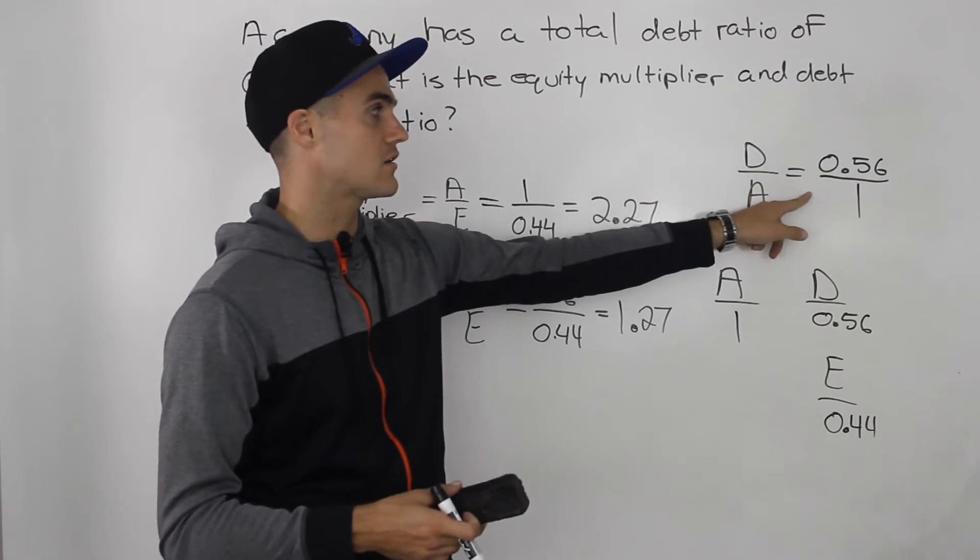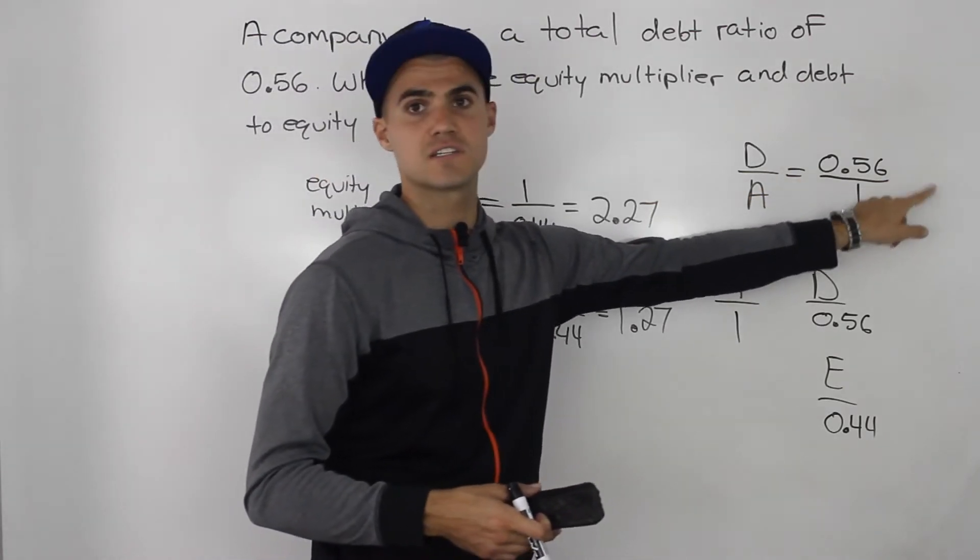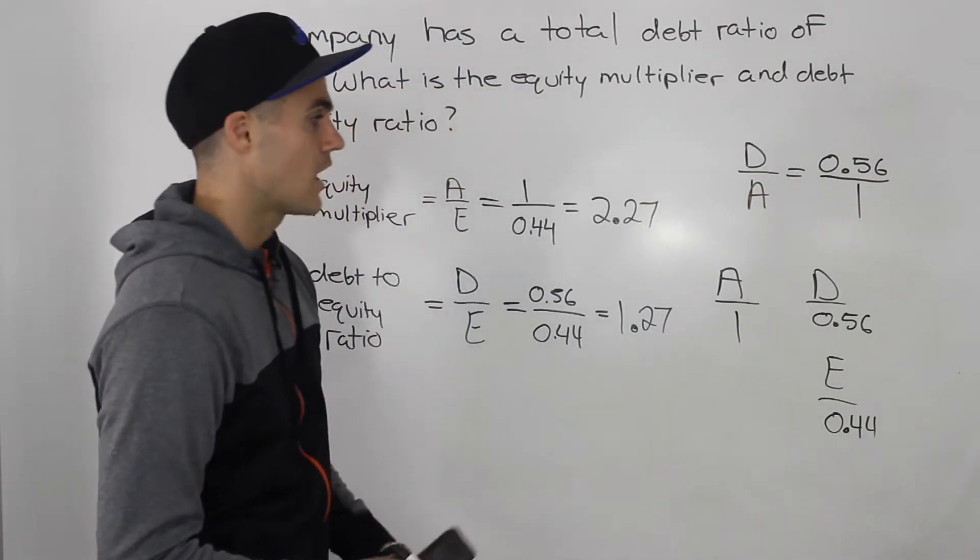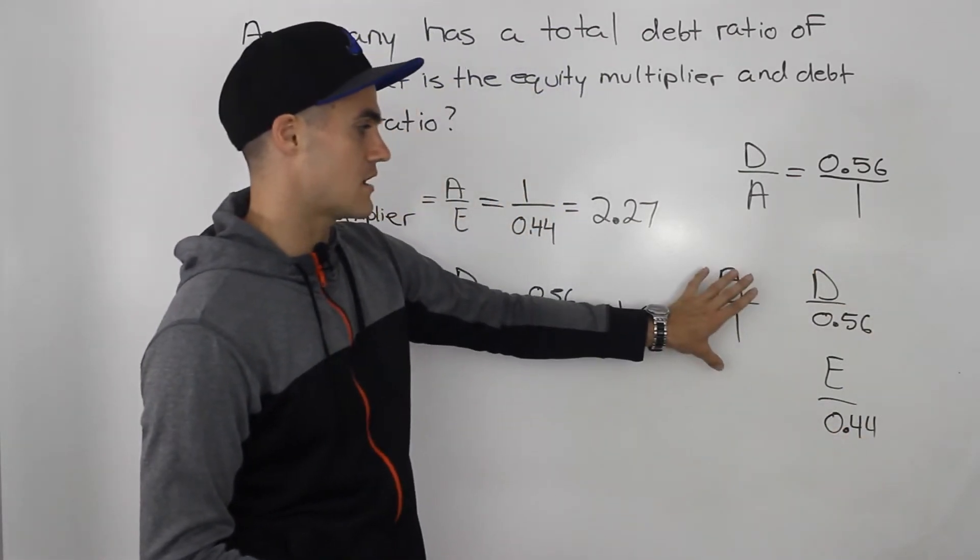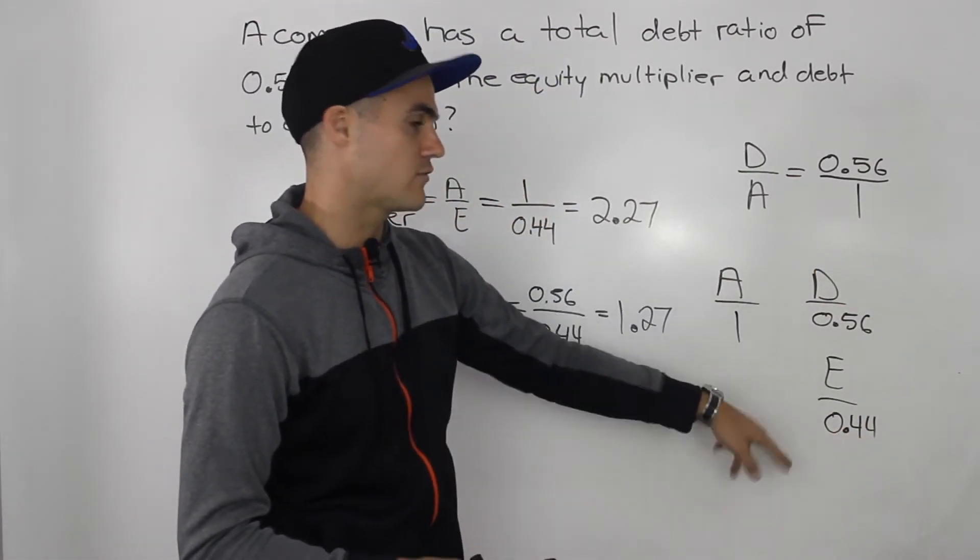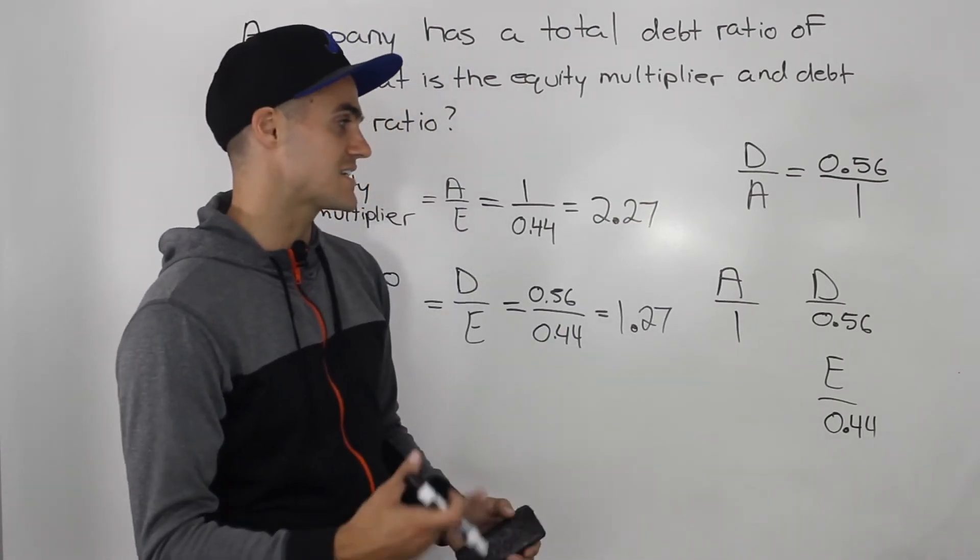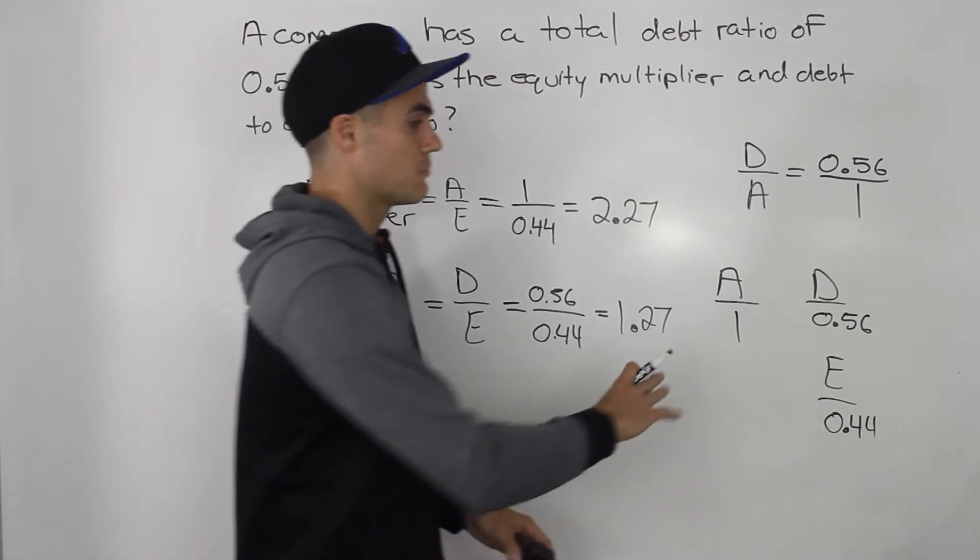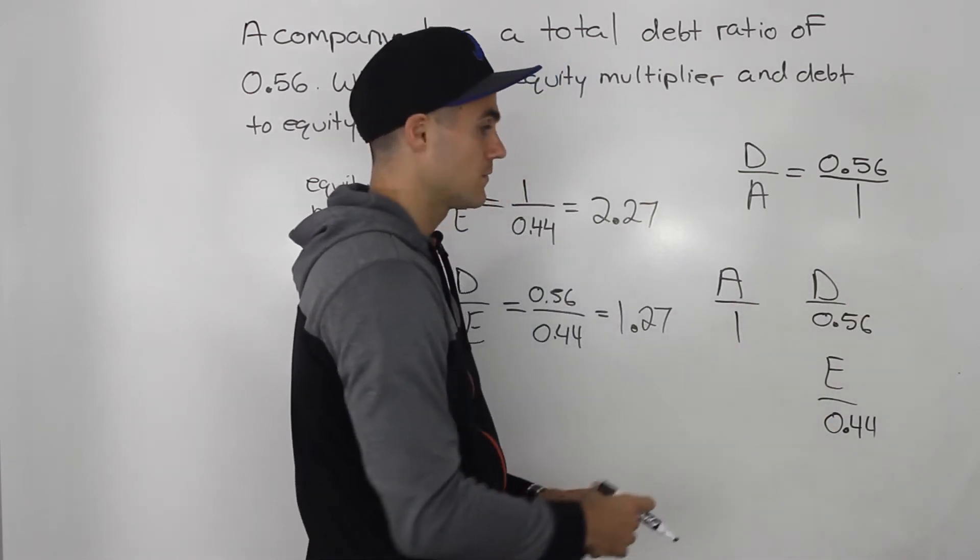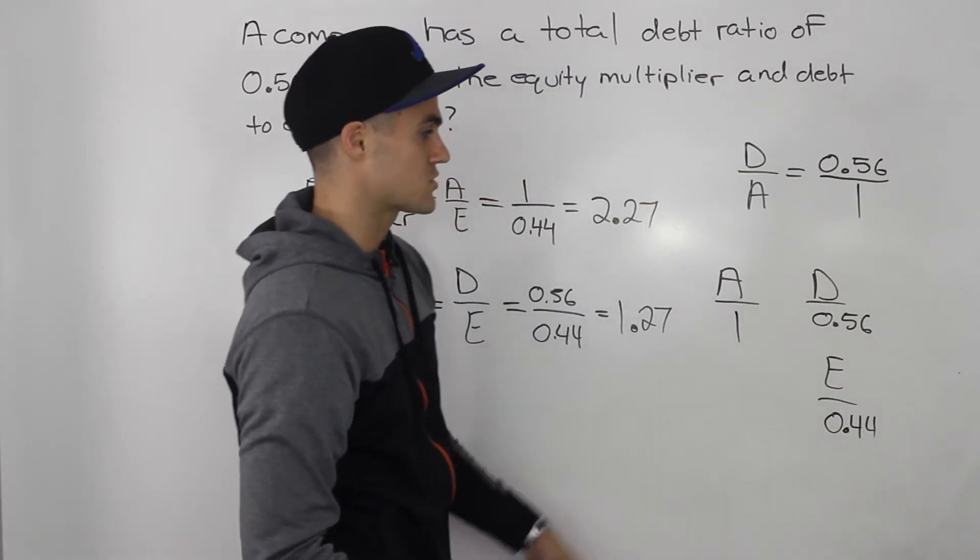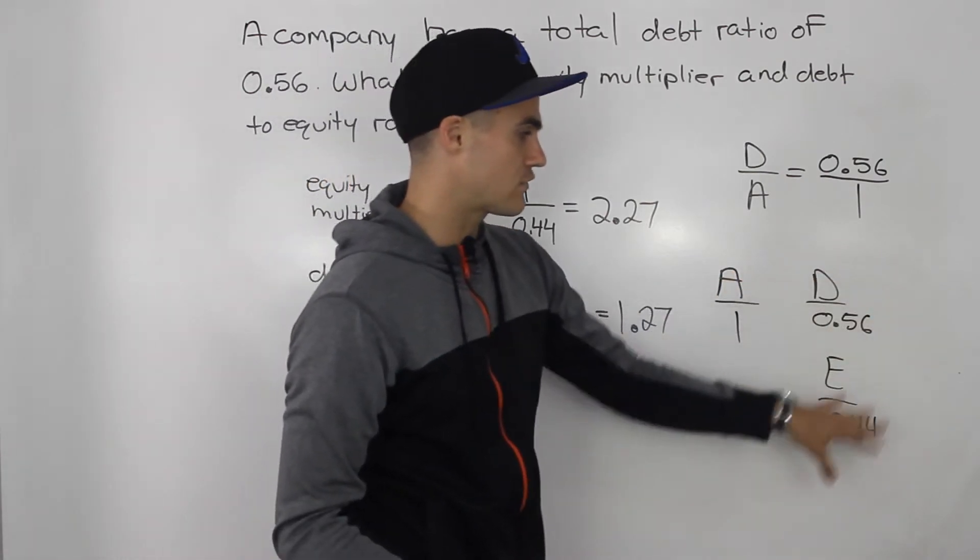So, instead of putting 0.56 here, you would put this as 56 over 100. Another thing you can do is once you have this mini balance sheet and you have a bunch of accounts and decimals, what you can do is you can multiply every account by the same number to get rid of these decimals. So, for example, you can multiply everything by 100.